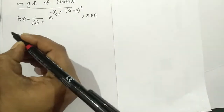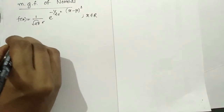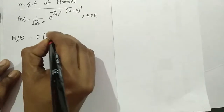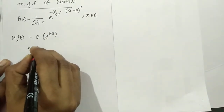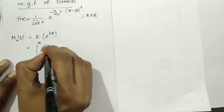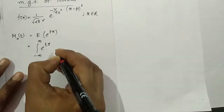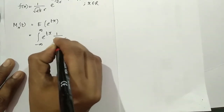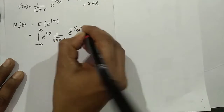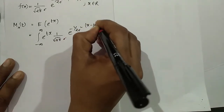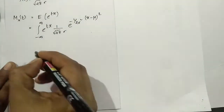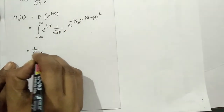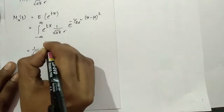The Moment Generating Function, M_X(t), by definition is equal to the expectation of e raised to tx, which equals the integral from minus infinity to infinity of e raised to tx times f(x) dx. Here, f(x) is 1 by root(2 pi) sigma times e raised to minus 1 by 2 sigma squared times (x minus mu) squared. Taking the constant out, we get 1 by root(2 pi) sigma times the integral from minus infinity to infinity.